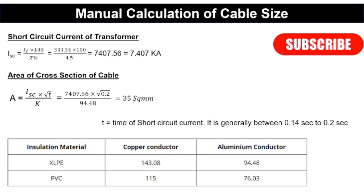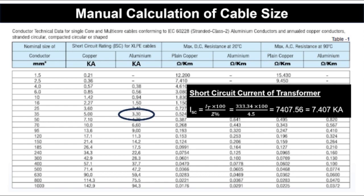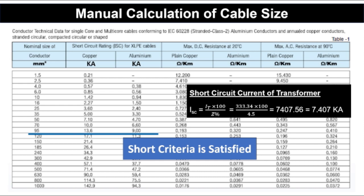Now we check whether this 35 mm² cable satisfies the short circuit current criteria using the cable catalog from KEI Industries. The 35 mm² cable has a short circuit current rating of 3.30 kilo-amperes, but our required short circuit current is 7.407 kilo-amperes — so the criteria is not satisfied. We move to the higher size: 95 mm², which has a short circuit current rating of 9 kilo-amperes. This satisfies the short circuit criteria.